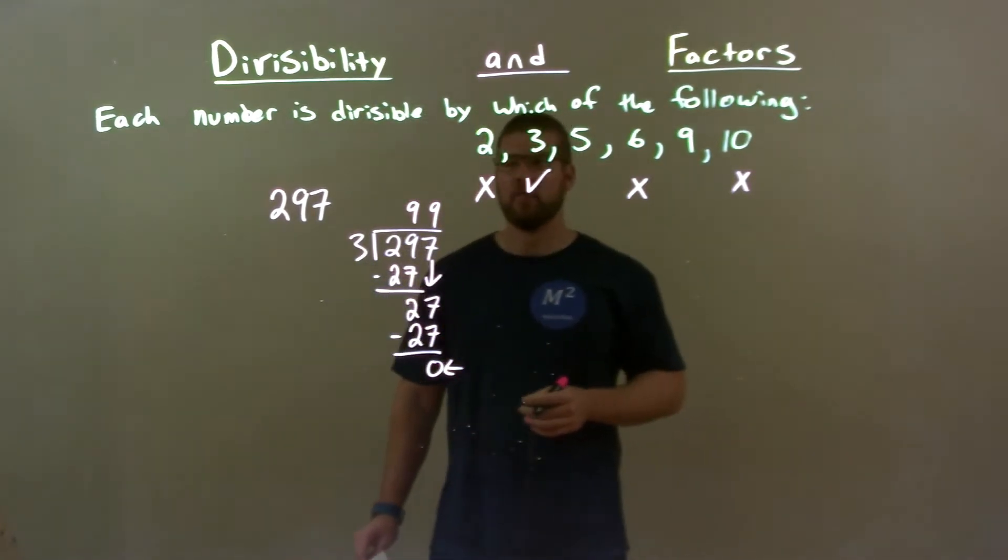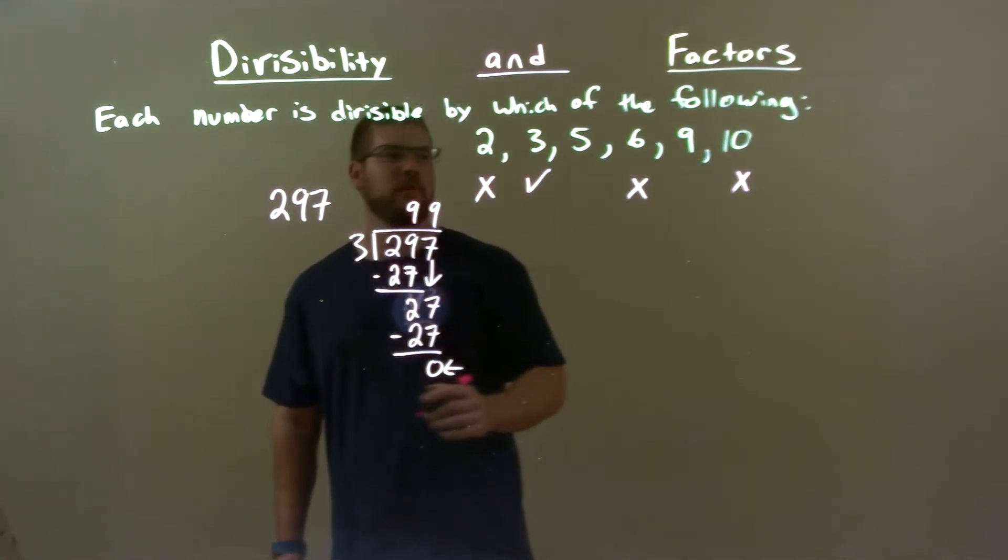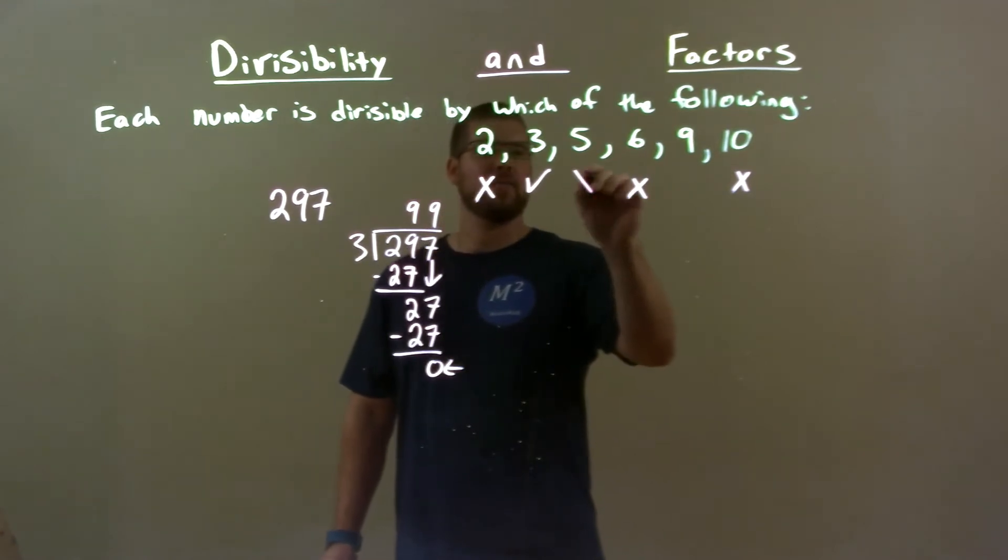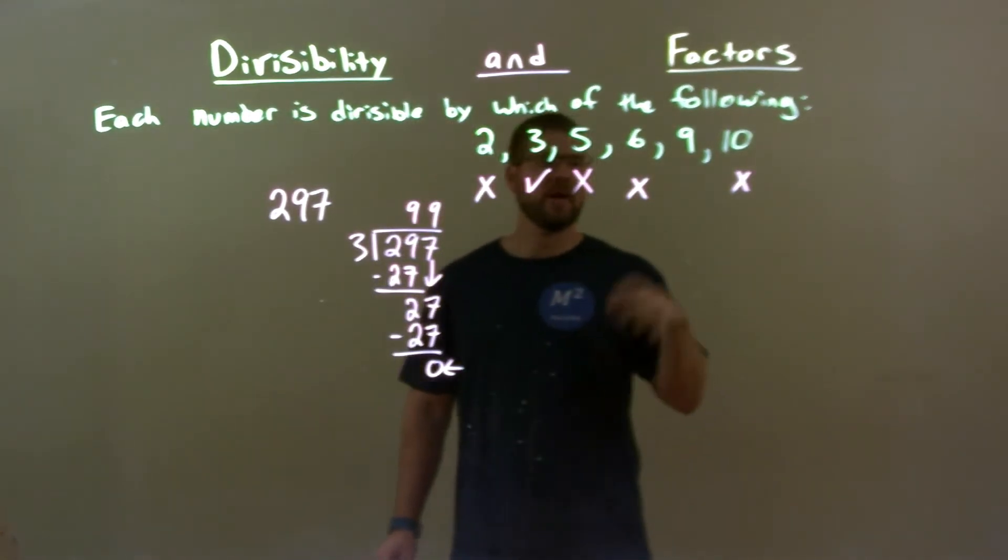Now we check 5. We do not end in a 5 or 0, so 5 is out. We already got it done with 6.